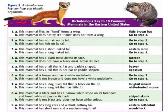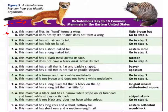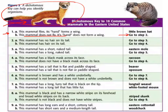The first series of statements is number one. 1A says: 'This mammal flies. Its hand forms a wing.' And 1B says: 'This mammal does not fly. Its hand does not form a wing.' Clearly, when we look at this animal, it is not a flying mammal, so 1B is the better statement. That tells us to go to step two.